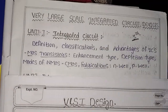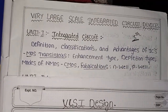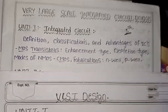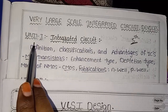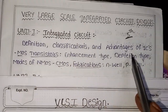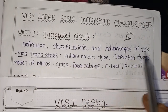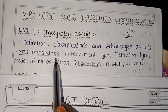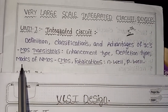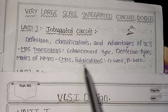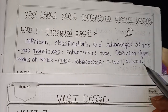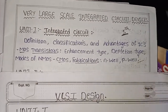The first unit-based topics are: Definition, Classification, Advantages of IC, MOS Transistors — Enhancement Type and Depletion Type — NMOS, CMOS Fabrication, N-well and P-well. These are the topics of the first unit.